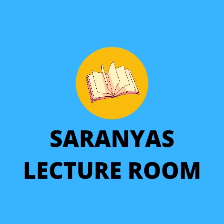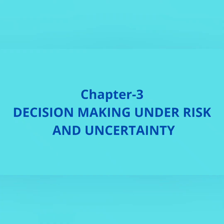If you have any questions, please comment in the comments section. Let's go to the third chapter. The third chapter is Decision Making and Risk and Uncertainty. In the case of a risky and uncertain situation, we are going to learn how to manage decisions in this chapter.